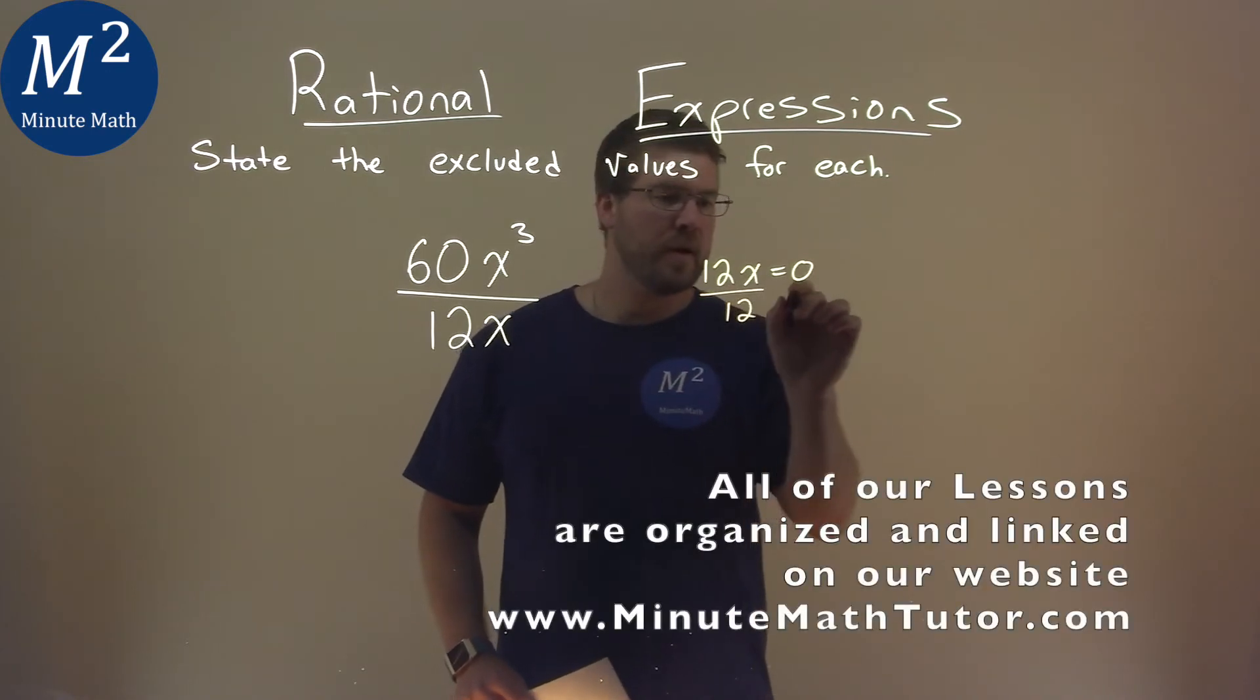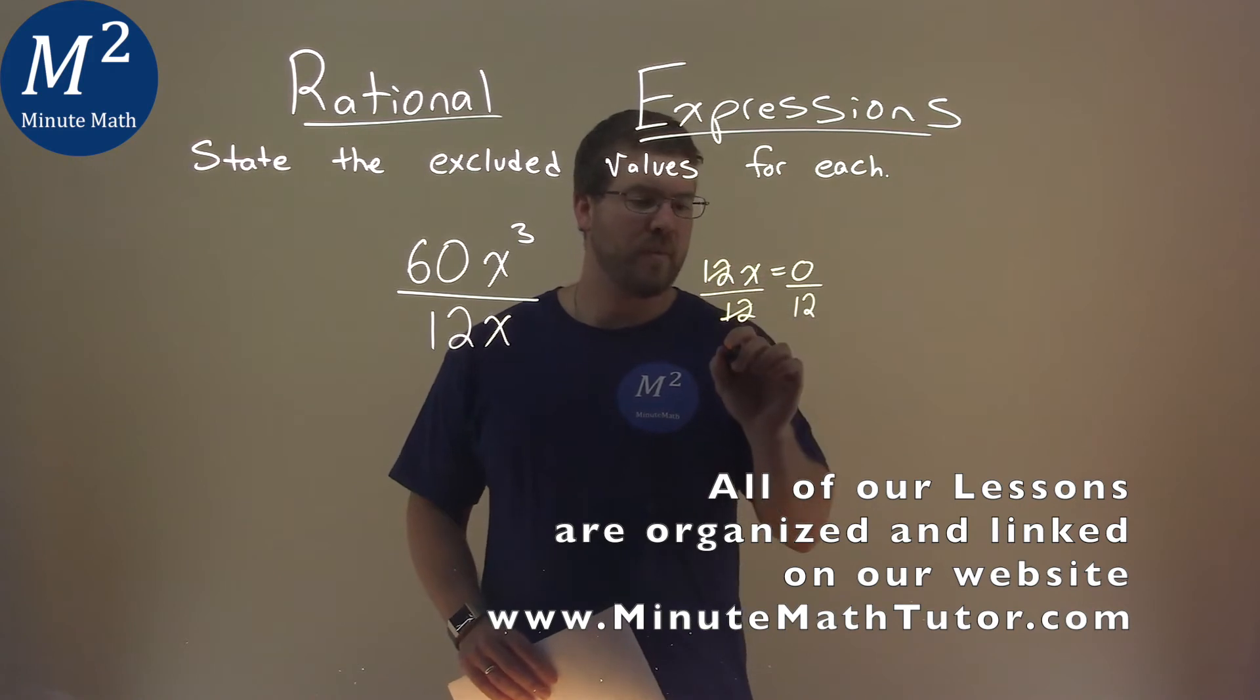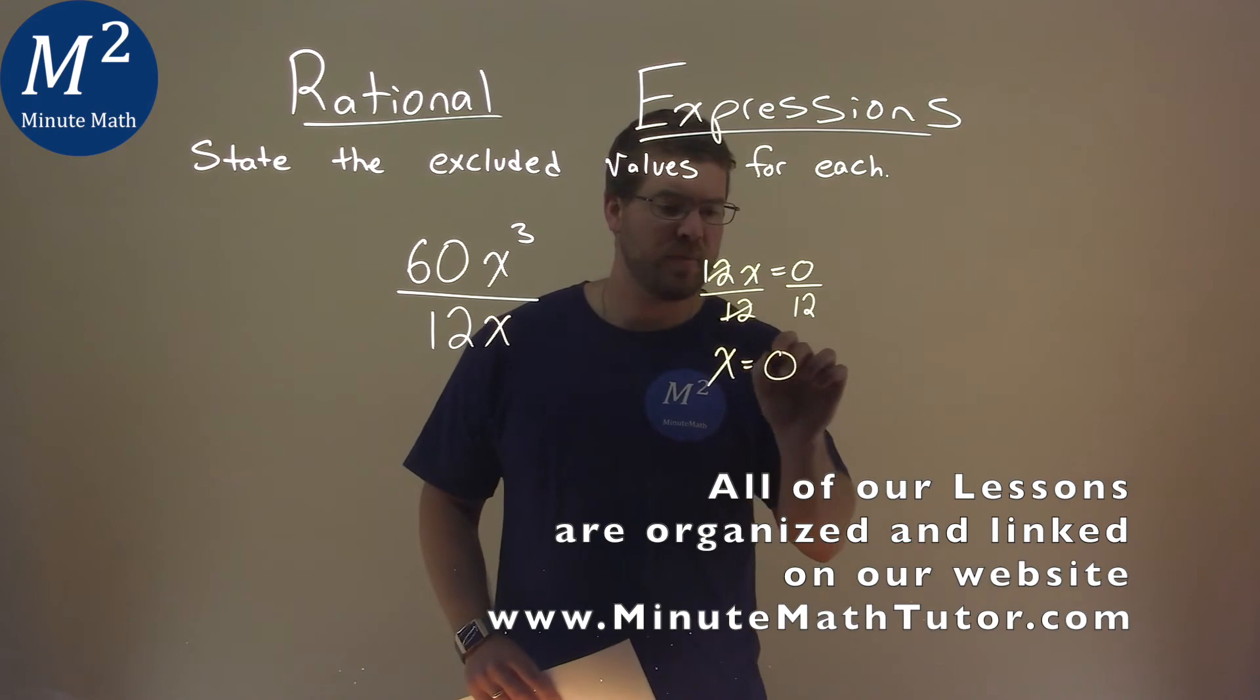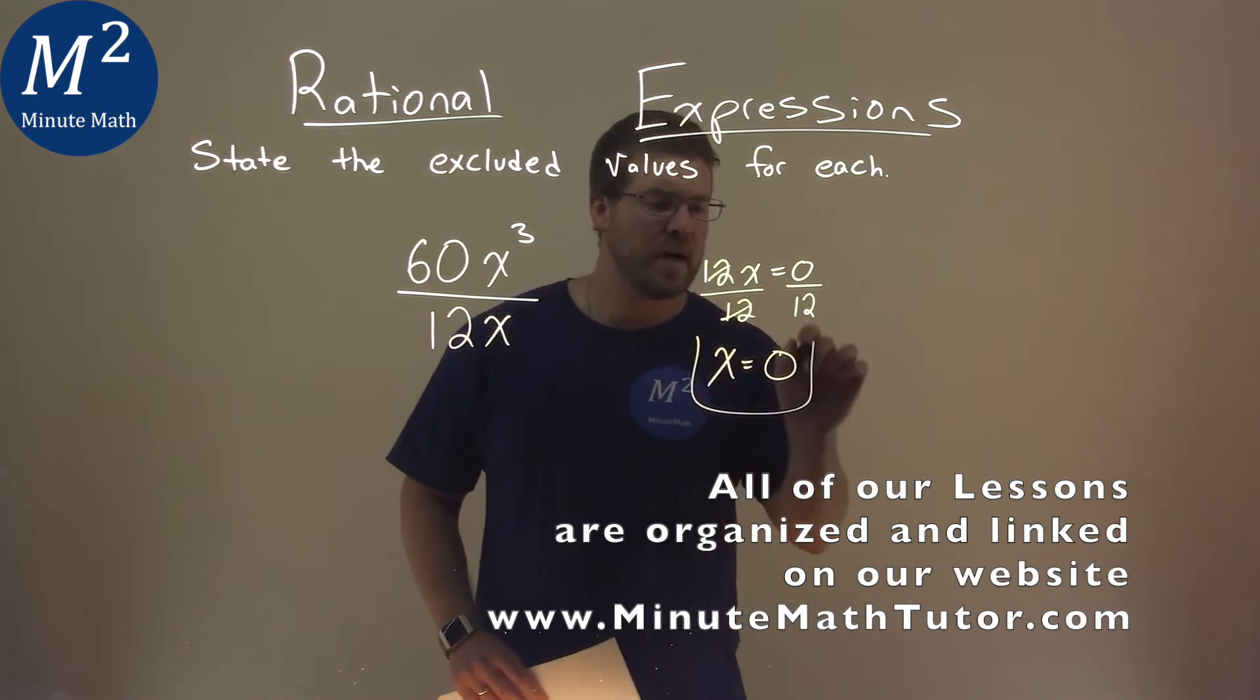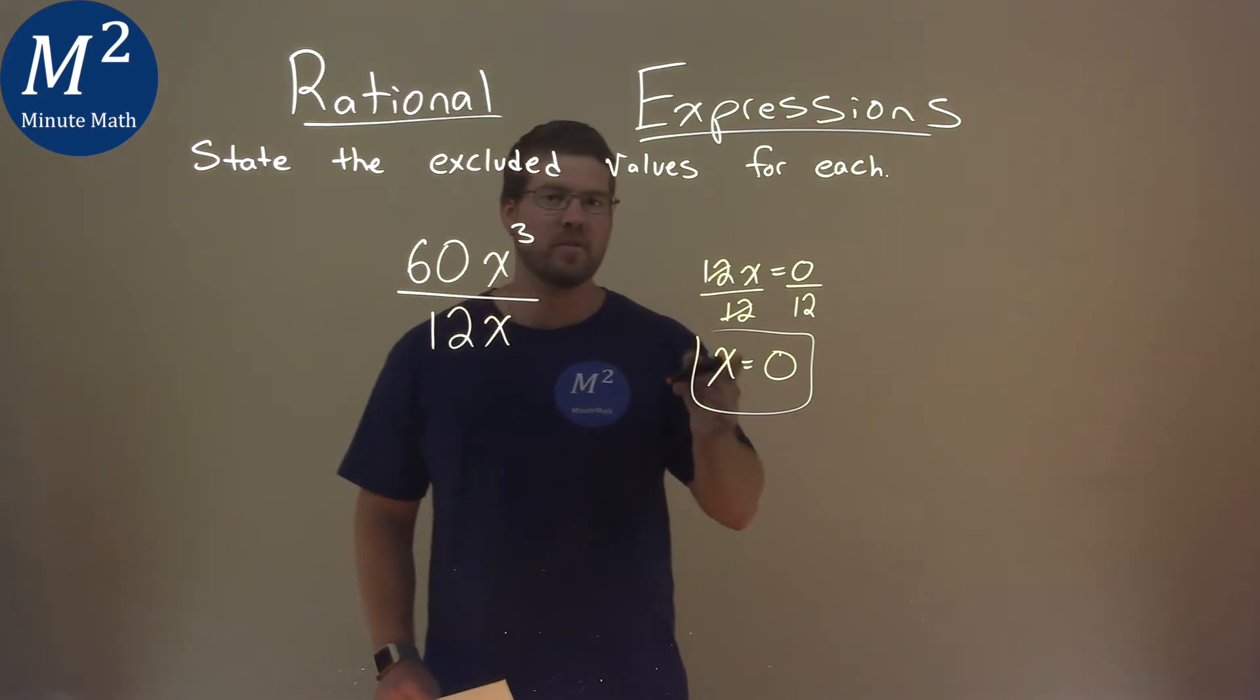I'll divide both sides by 12 here, and I'm left with x by itself. Well, 0 divided by 12 is 0. And so what does that tell us? That tells us that 0 is our excluded value.